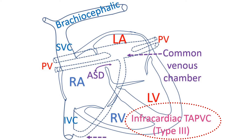Next is the infracardiac variety, in which pulmonary veins go below the diaphragm, the breathing muscle separating the chest cavity and the abdomen. The pulmonary veins then join the portal vein in the liver and drain to the inferior vena cava, the blood vessel draining blood from the lower part of the body to the heart. Infracardiac means below the heart.